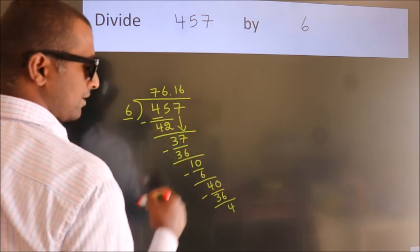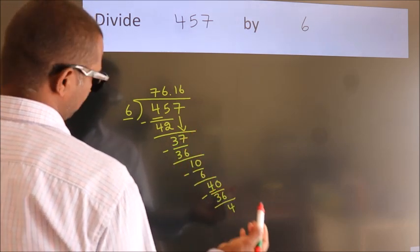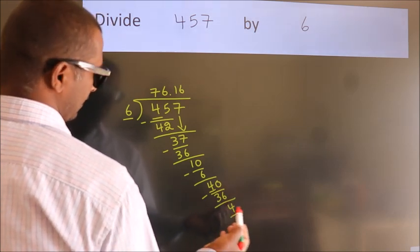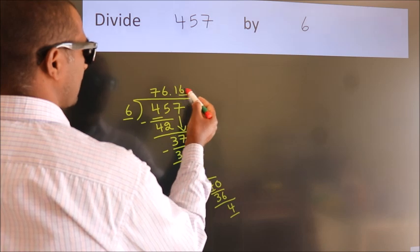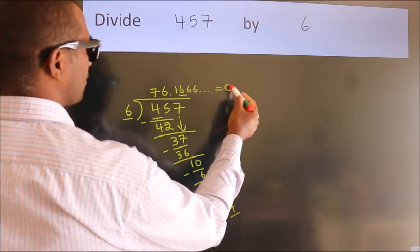Now, you observe: we had 4 here and we got 4 again. That means, this number keeps on repeating. So, this is our quotient.